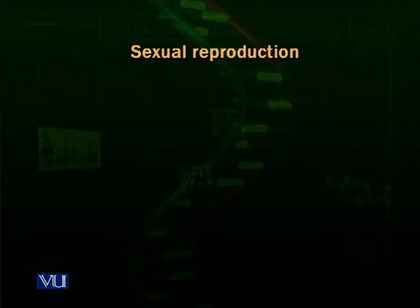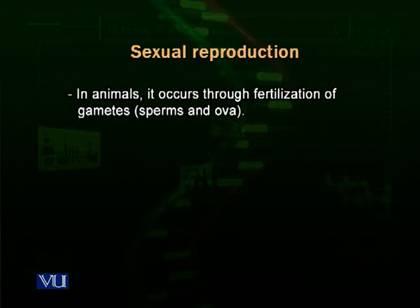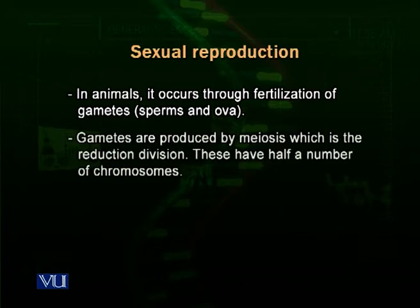Now we talk about sexual reproduction in animals. In animals, sexual reproduction also occurs just like plants, through fertilization of gametes which are called the sperms and the ova — sperms in the case of males and ova in the case of females. Gametes are produced in animals, just like all other organisms, by the process of meiosis.